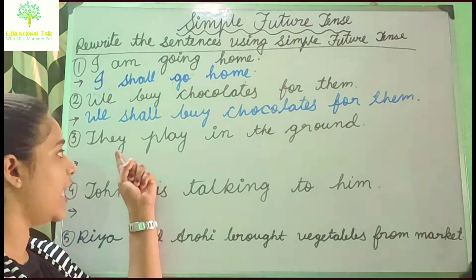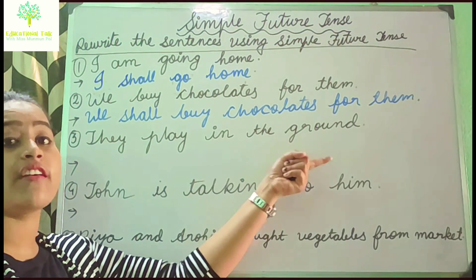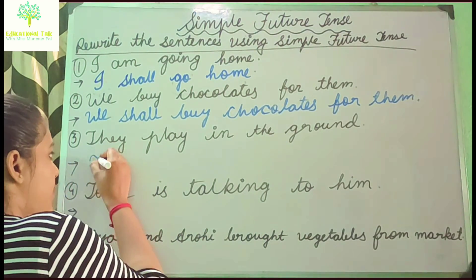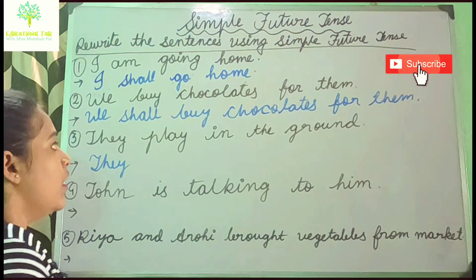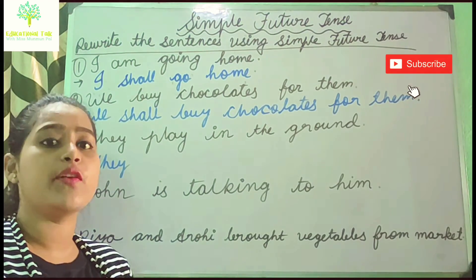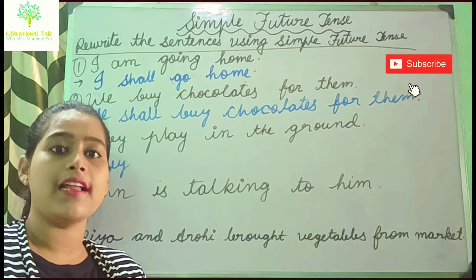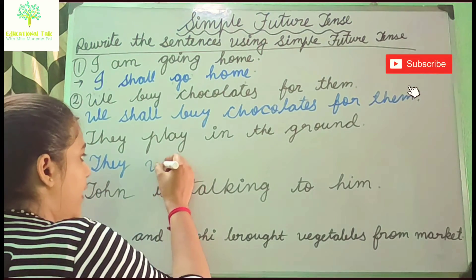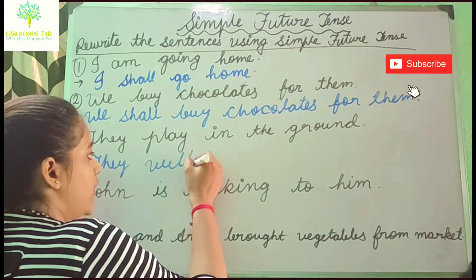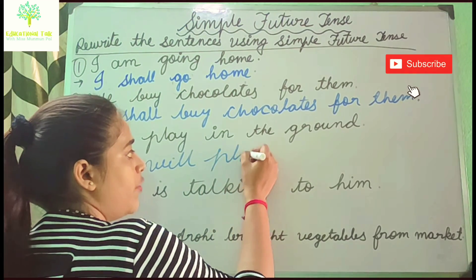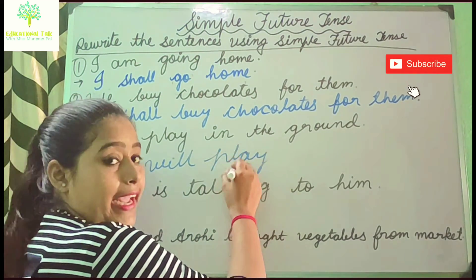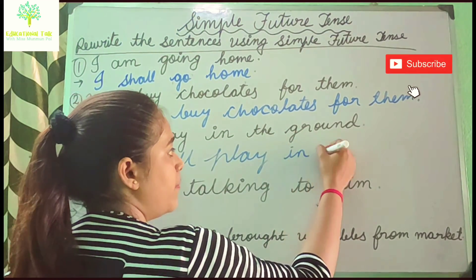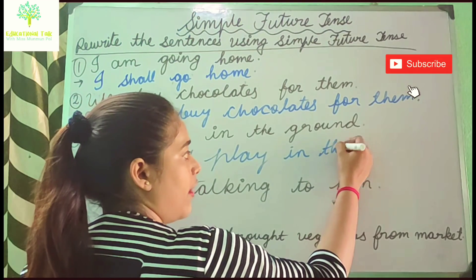Next one: 'They play in the ground.' The subject is 'they'. After 'they' it will be 'will'. So: 'They will play in the ground.' Here 'play' is the V1 form.